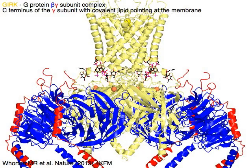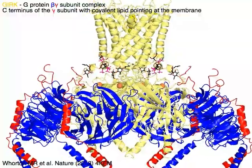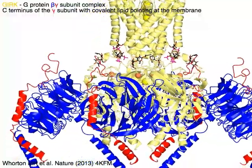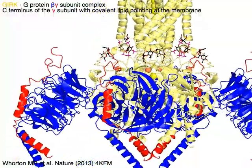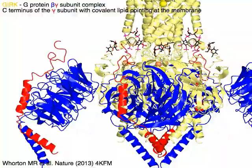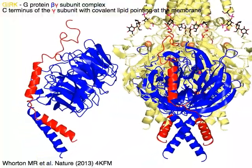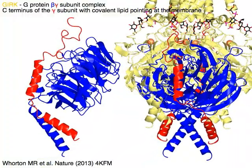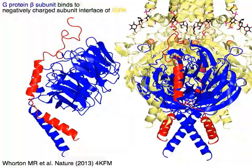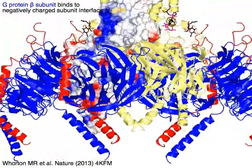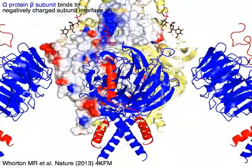GIRK in yellow, in complex with G-protein beta subunit in blue and gamma subunit in red. The C-terminus of the gamma subunit in red has a covalent lipid pointing at the membrane. The G-protein beta subunit binds to the negatively charged subunit interface of GIRK.